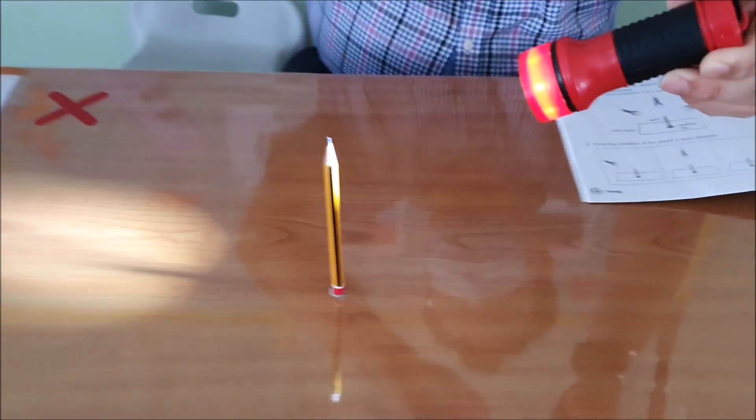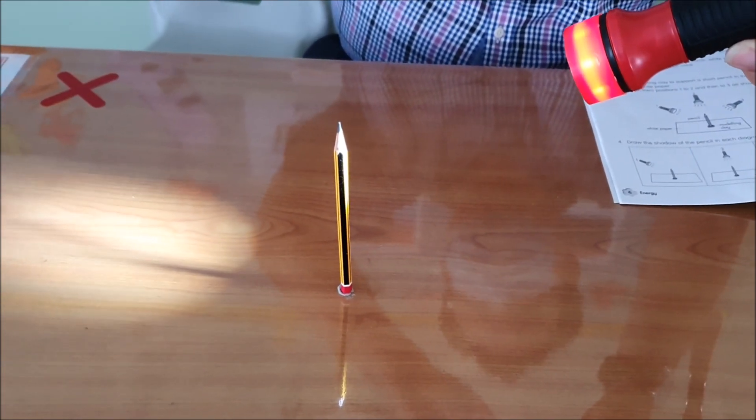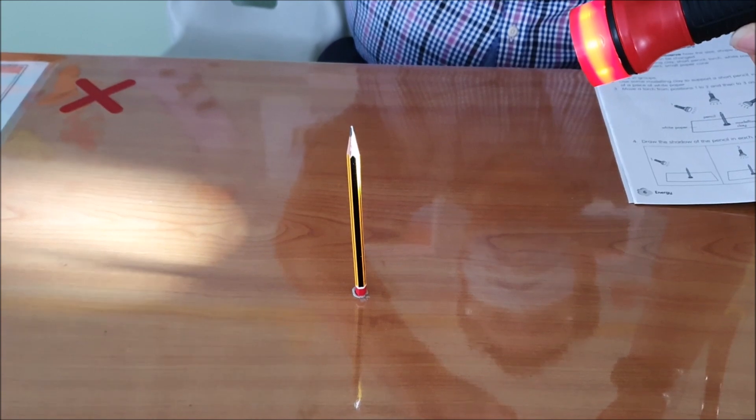You need to draw the position of the shadow in your workbook. That's the end of the experiment.